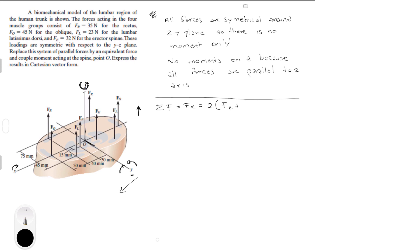So we have F_R, this is resultant, plus F_E plus F_L plus F_O. So when you plug these numbers in you get two times 35, this is all in Newtons, plus 32 plus 23 plus 45.